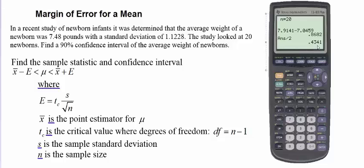So if you were to do 7.48 plus 0.4341, you're going to get the 7.9141. If you were to do 7.48 minus the 0.4341, you're going to get the bottom of your interval, 7.0459. So your E here, your margin of error, was 0.4341 pounds.